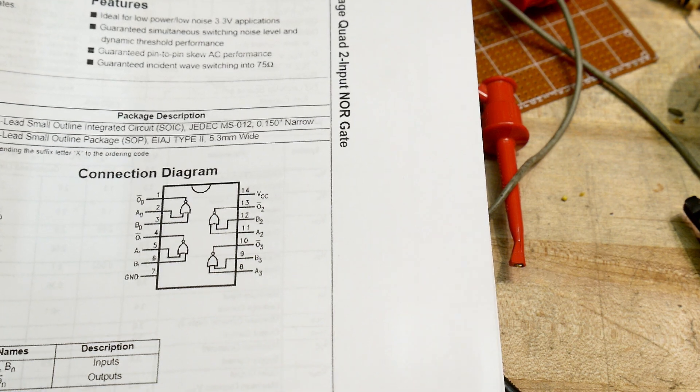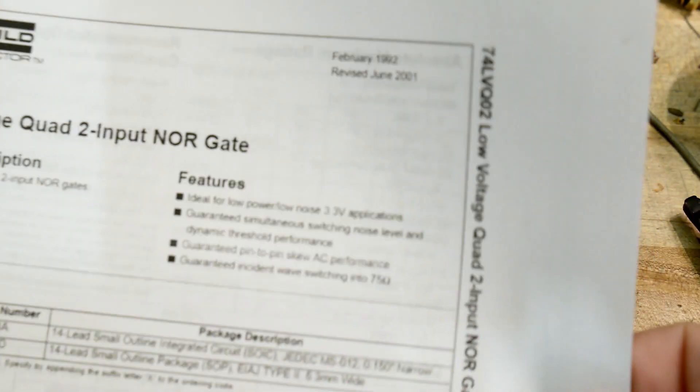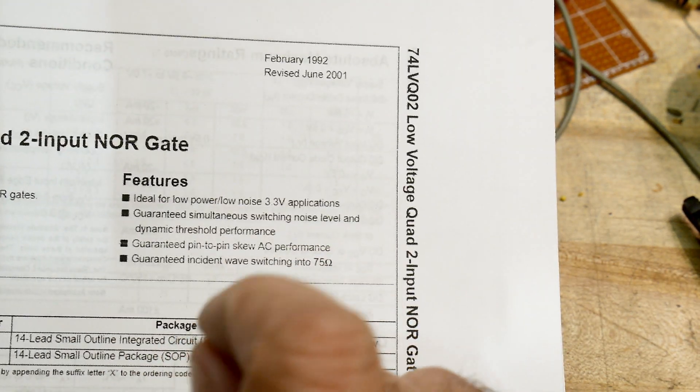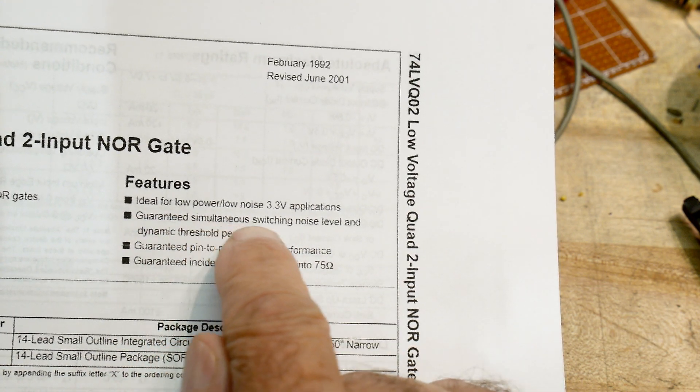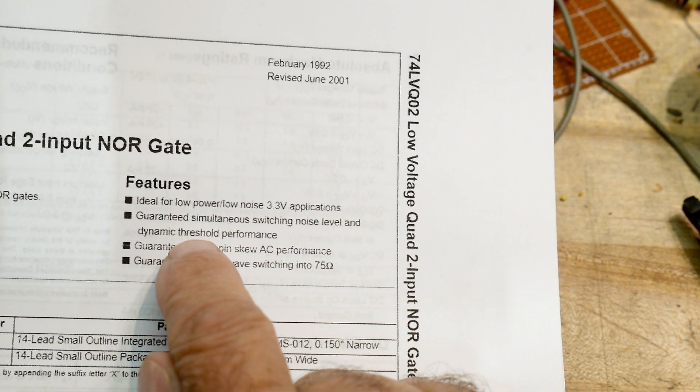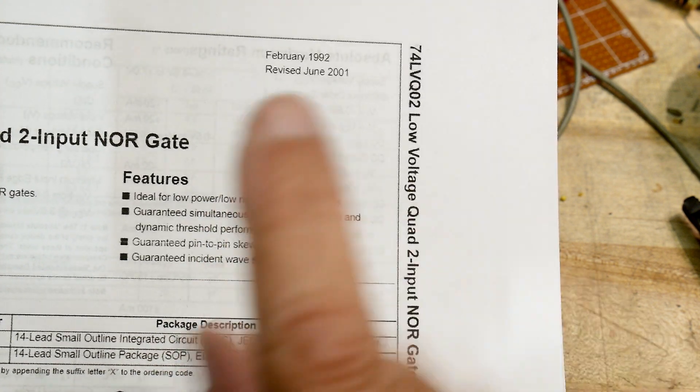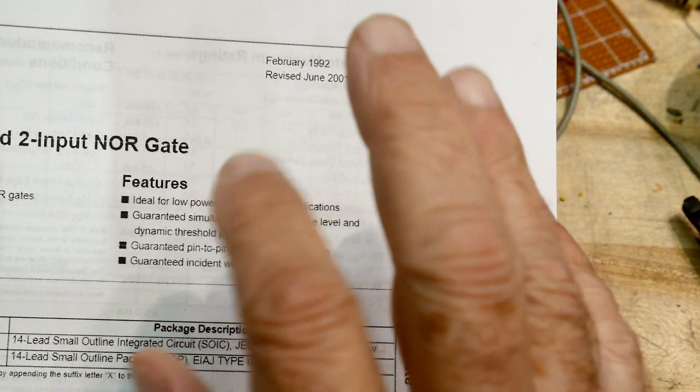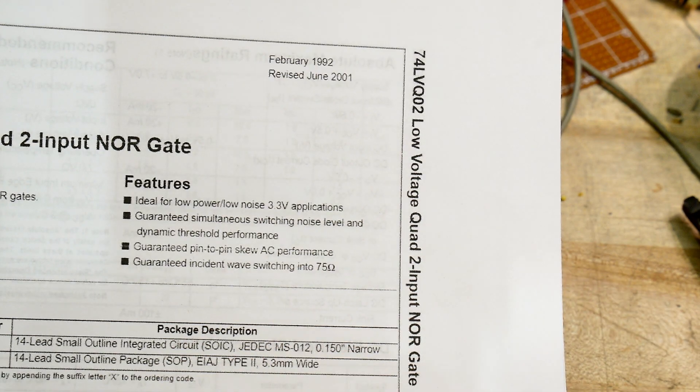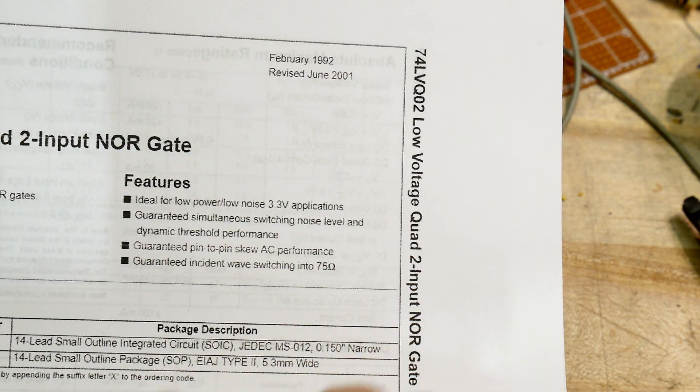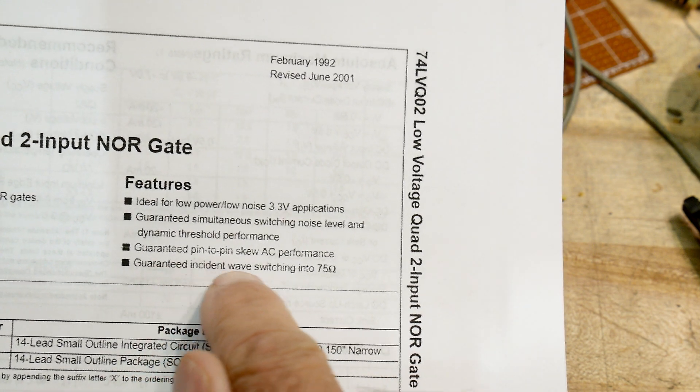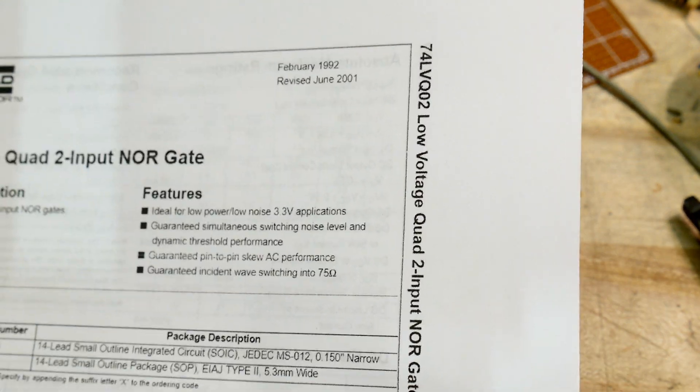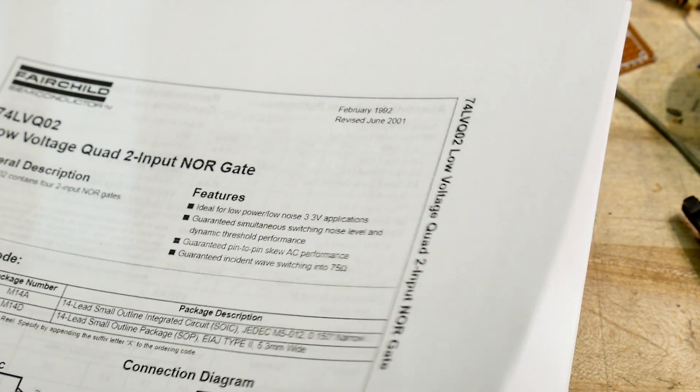So quad 2-input NOR gate. Let's read what its claim to fame is: ideal for low power, low noise 3.3 volt applications, guaranteed simultaneous switching noise level and dynamic threshold. So it's low power, low noise. The switching can get spikes into the power supplies, and if it's a real low power battery powered thing you don't want a bunch of stuff going around. Guaranteed skew, guaranteed incident wave switching into 75 ohms. That's kind of an interesting number.